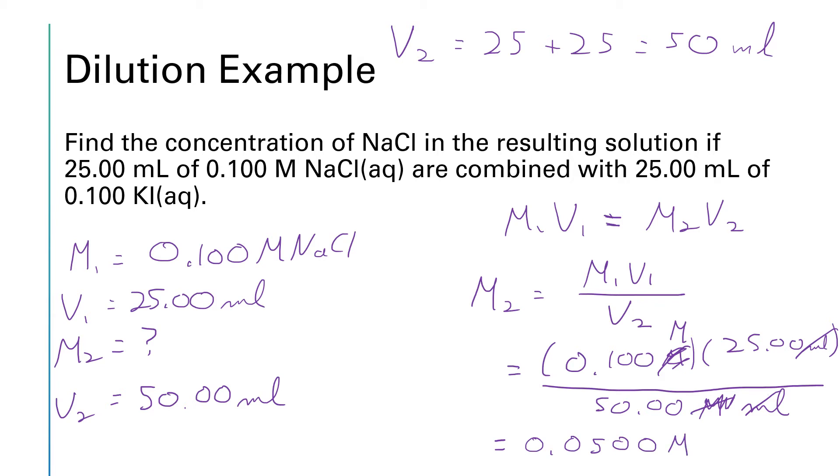Another way you could think of this problem and this kind of thing does happen fairly often is we doubled the volume. The volume went from 25 milliliters of salt to 50 mls in our combined solution. If you double the volume you're going to cut the concentration in half.